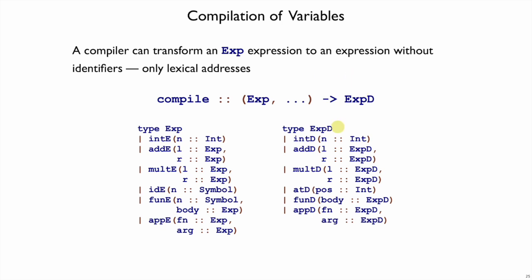So, this expd abstract syntax is just like exp, but where exp had IDE with symbol names, we're going to have an atd with numeric positions. These positions are called lexical addresses because they rely on lexical scope and they tell us the address of where the variable is going to be in the environment.